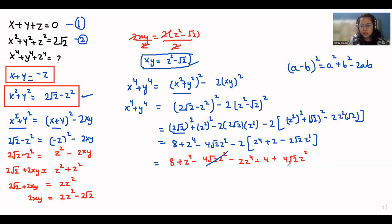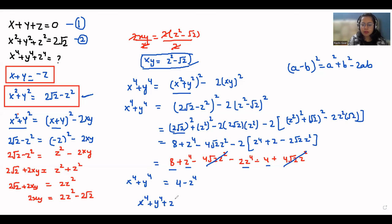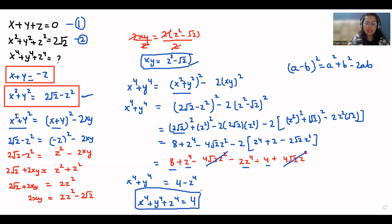The 4√2·z² terms cancel out. We get 8 - 4 = 4, and z⁴ - 2z⁴ = -z⁴. So x⁴+y⁴ = 4 - z⁴. Taking -z⁴ to the other side, the value of x⁴+y⁴+z⁴ = 4. I hope it's clear and you find it useful. Please give us a thumbs up and do subscribe to my channel. Stay tuned.